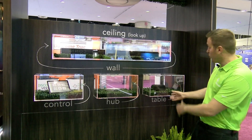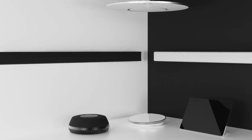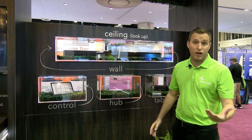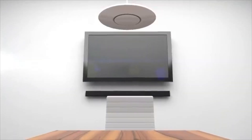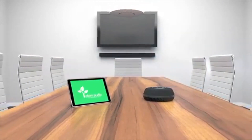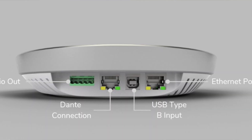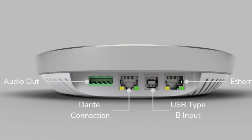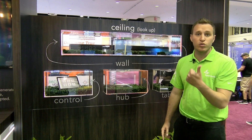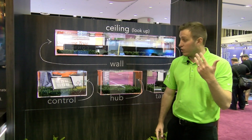We have some stuff you're pretty familiar with: a conference phone, a microphone array with a speaker, and a ceiling array. The beauty of the STEM ecosystem is the ability to mix and match these devices in your conferencing room — ceiling array, wall, and table all working together. They're all connected over the network to the hub, which is the brains of the operation, connected to the dedicated PC running Zoom, Skype for Business, WebEx, or whatever video conferencing system your end users are using.